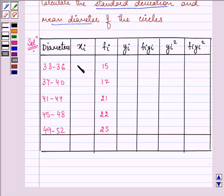And that is giving us 34.5. Then we have 38.5, that is 37 plus 40 upon 2. Then we have 42.5, then 46.5 and 50.5.